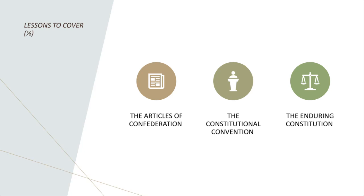The Constitution created a system of government based on the principles of federalism — where power is divided between a strong central government and individual states. It established a framework for a balanced federal government with three branches, which are very important for you to know. These are the legislative, where you make and amend the laws.